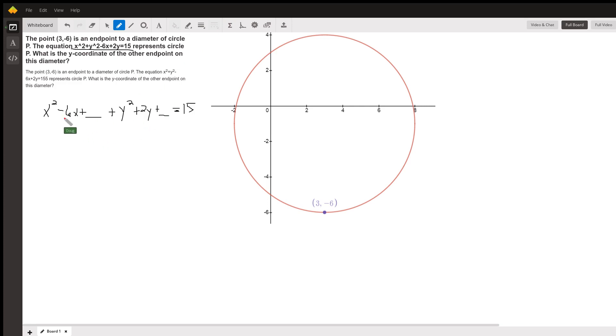And we do that by taking half of the number in front of x, which will be negative 3, and squaring it to get 9. And that means we have to add 9 to the other side of the equation to keep it in balance.